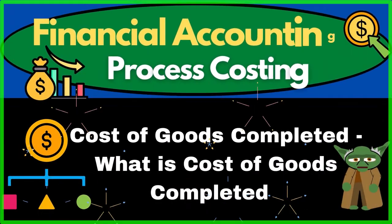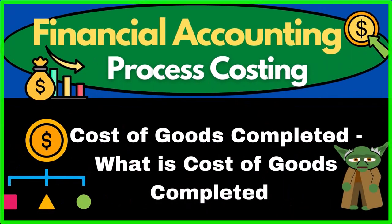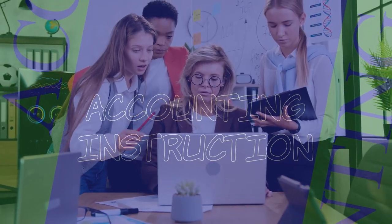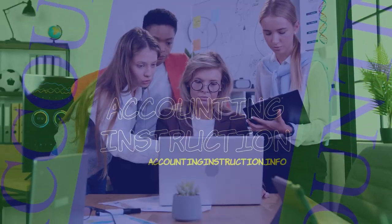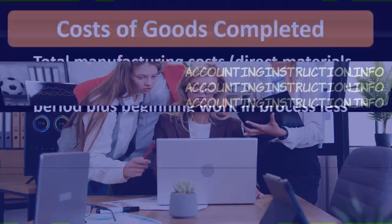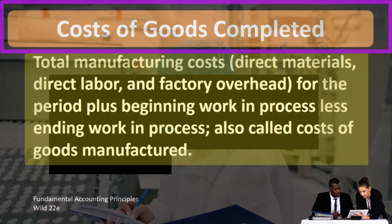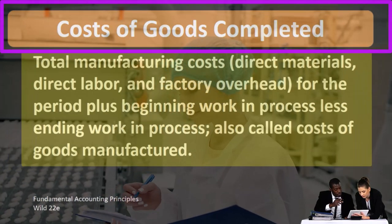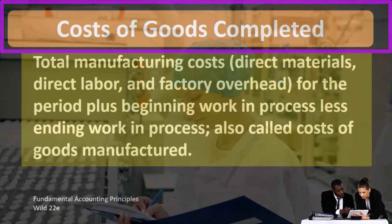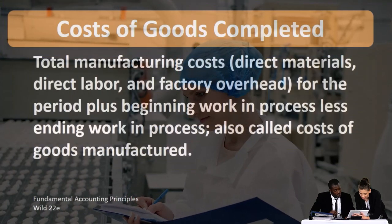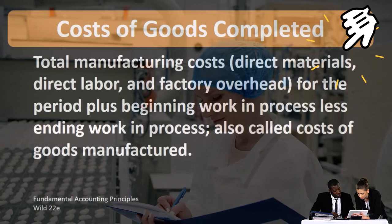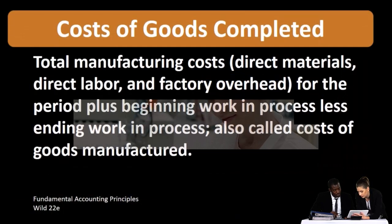In this lecture we will define cost of goods completed. According to Fundamental Accounting Principles Wild 22nd Edition, the definition of cost of goods completed is total manufacturing costs — direct materials, direct labor, and factory overhead — for the period, plus beginning work in process, less ending work in process. Also called cost of goods manufactured.